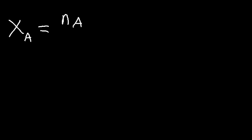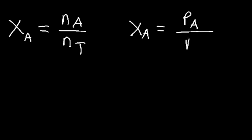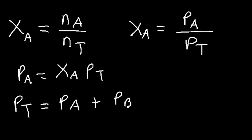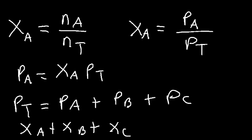In this video we're going to focus on mole fraction and partial pressure. There are different ways you can find the mole fraction. The mole fraction of substance A is the moles of A divided by the total moles. It's also equal to the partial pressure of A divided by the total pressure. The partial pressure of A equals the mole fraction of A times the total pressure. According to Dalton's law of partial pressure, the total pressure is the sum of all the partial pressures, and the sum of all mole fractions is always equal to one.